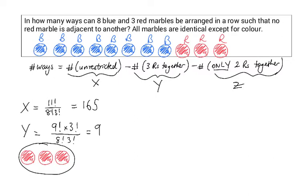Now it's time to find the last expression, z. And this is the trickiest one of all 3. It might be tempting here to say that z is equal to 10 factorial, because you would probably bind the 2 red marbles together, giving you a total of 10 units, multiply it by 2 factorial.